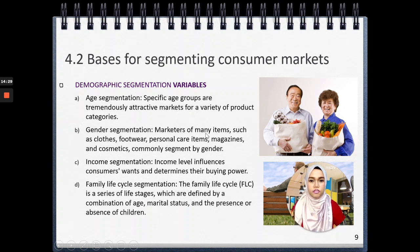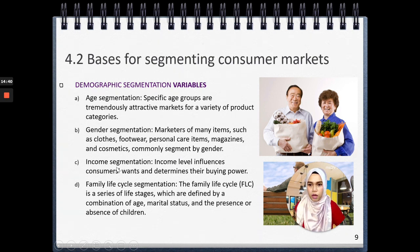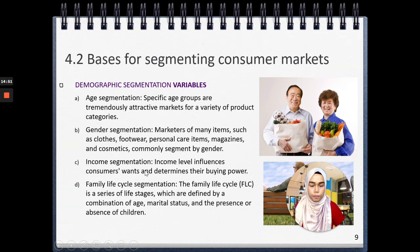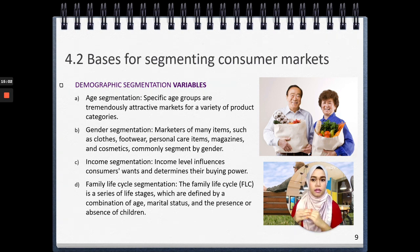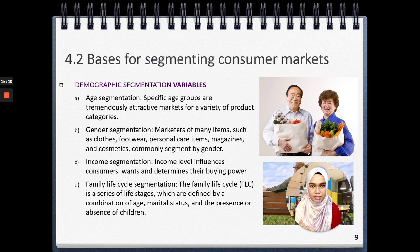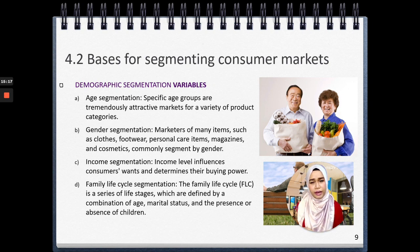Gender segmentation — like Nivea and Nivea Men — is commonly used for clothes, footwear, personal care items, magazines, and cosmetics. Income segmentation is also important because income level influences consumer wants and determines buying power. For example, Bawal Exclusive — a type of scarf or shawl — can cost 10,000 ringgit for one piece. For high-income consumers, that price may seem cheap, though for most of us it's very expensive.